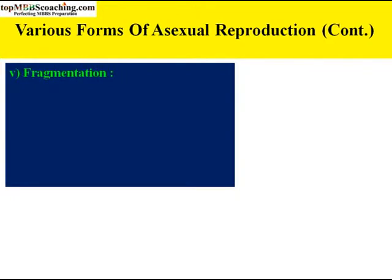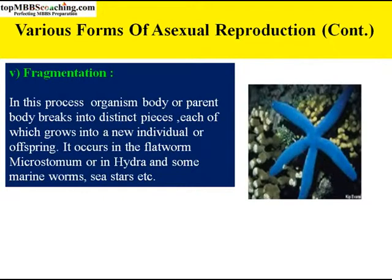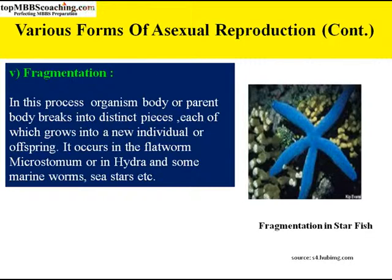Next is fragmentation. In this process, the organism's body or parent body breaks into distinct pieces, each of which grows into a new individual or offspring. It occurs in flatworms like Microstomum, or in hydra and some marine forms like starfish. Fragmentation is breaking of an individual into two or more parts. When a starfish breaks into parts due to external or internal force, each fragment grows into a new individual — this is called regeneration.